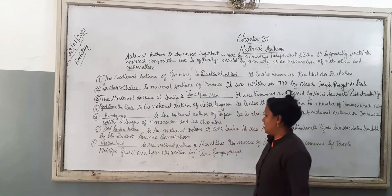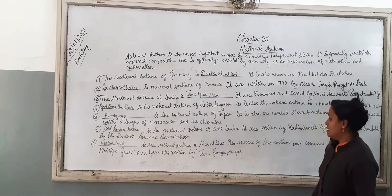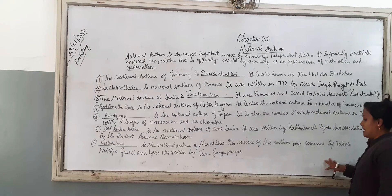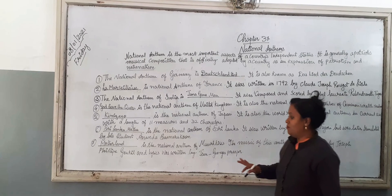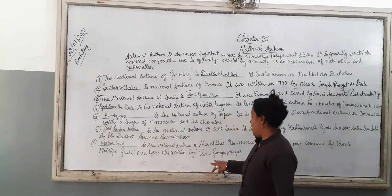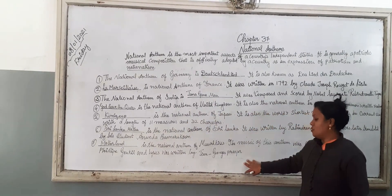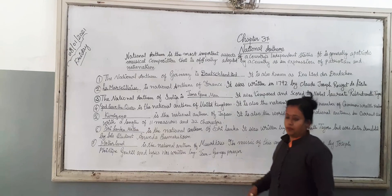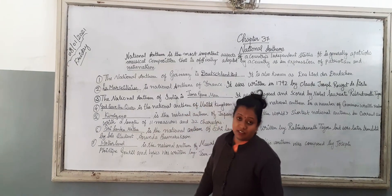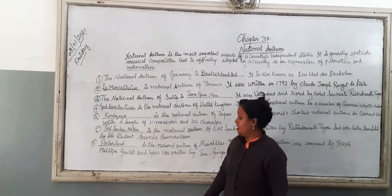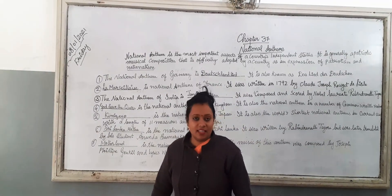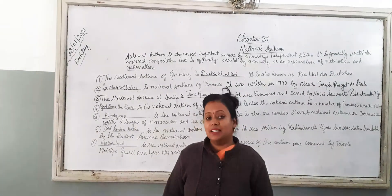The National Anthem of Mauritius is 'Motherland'. The music of this anthem was composed by Joseph Philip Jindal and the lyrics were written by Jean Georges Prosper. The National Anthem of Mauritius is Motherland.